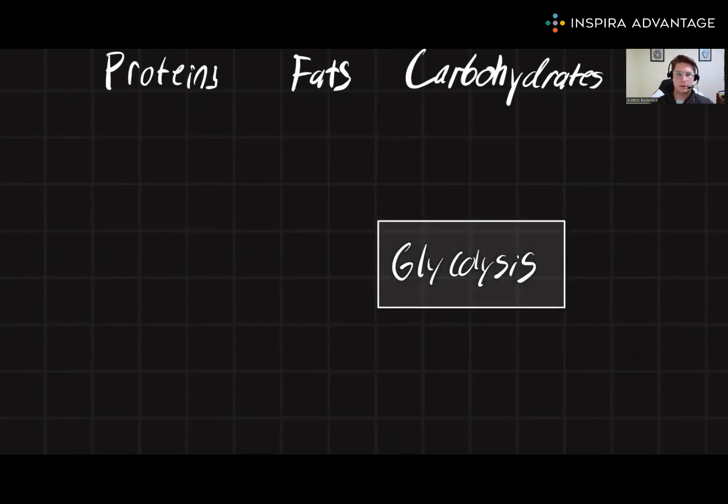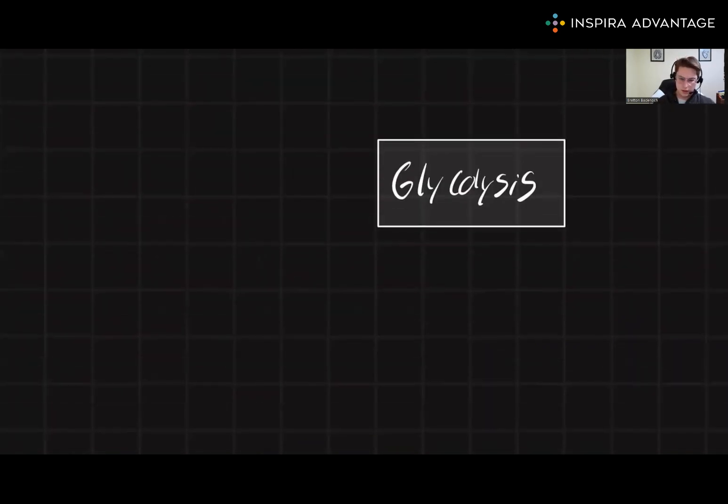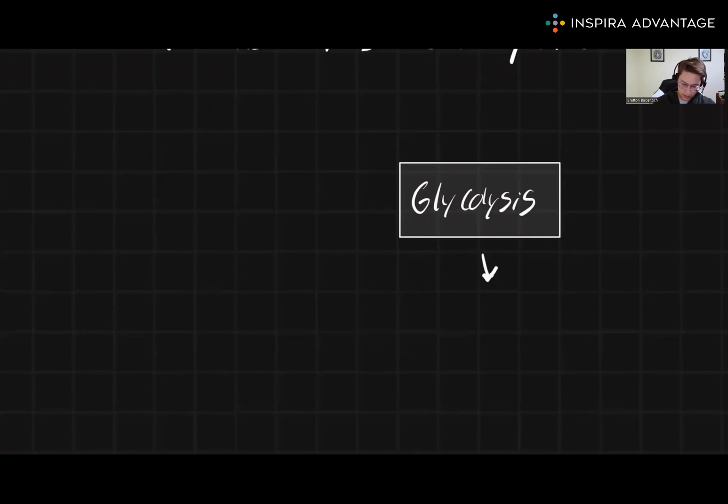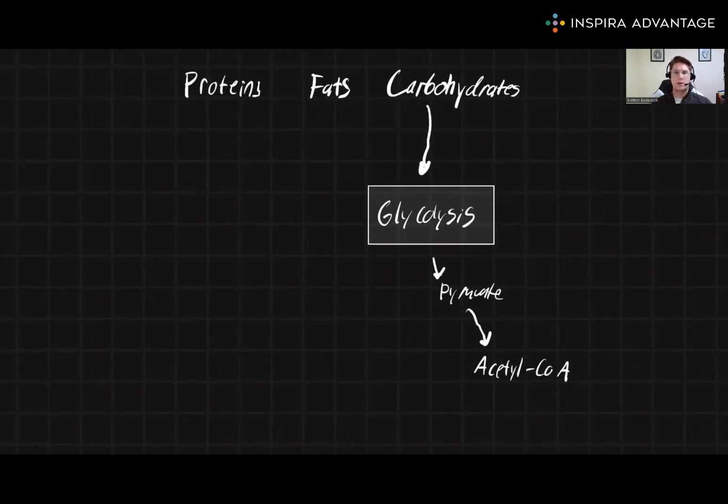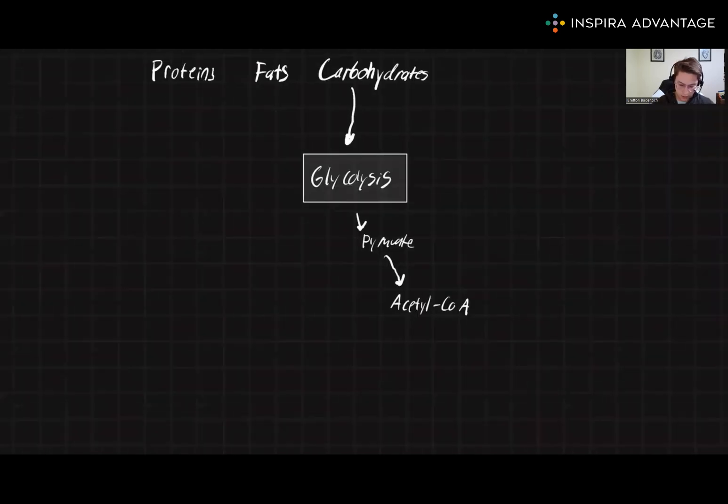A major product from glycolysis is acetyl-CoA. Technically, first it's pyruvate, then we've got acetyl-CoA. Acetyl-CoA will then enter the TCA cycle inside the mitochondria. So let's add that to our diagram.